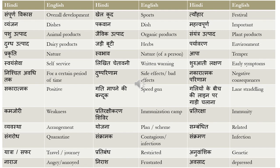'Pashu utpadh' means animal products. 'Jayvik utpadh' means organic products. 'Sayantrik utpadh' means plant products. 'Dugdh utpadh' is dairy products. 'Paryavaran' means environment. 'Prakriti' means nature in an environmental sense. There's a difference between 'prakriti' as environmental nature and 'swabhav' as the nature or character of a person.